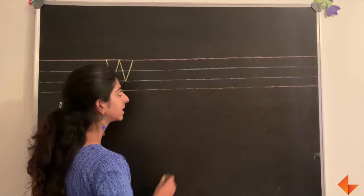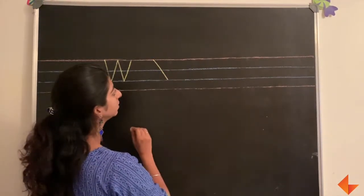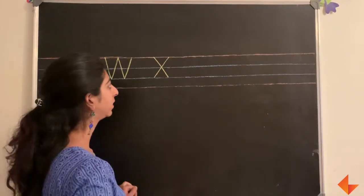To write the letter X, start from the top and draw a slanting line, again start from the top and draw another slanting line.